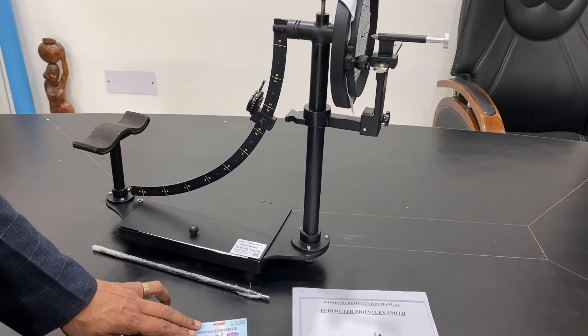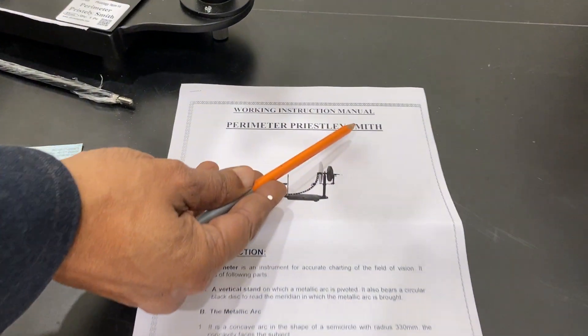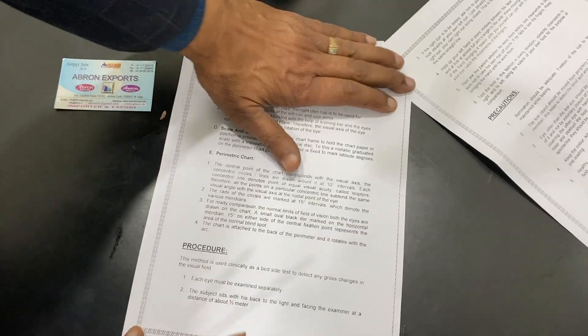Welcome to another video by Avron. This is a pharmacy instrument, a perimeter Prisley-Smith type. This manual is provided by us with full detailed instructions.